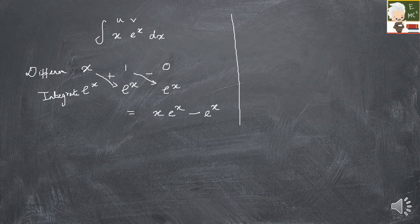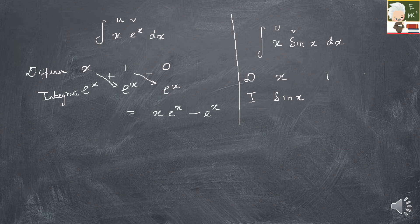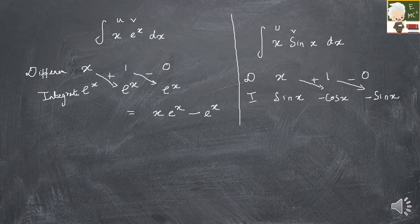One more example: integral of x·sin(x) dx. Let x be the first term and sin(x) be the second term. Differentiating x gives 1, then 0. Integrating sin(x) gives −cos(x); integrating again gives −sin(x), so minus sin(x). Crossing the terms with alternating signs, the final answer is −x·cos(x) + sin(x). This is simpler than working out U and dV one by one.